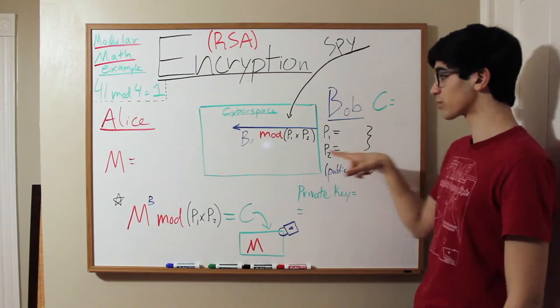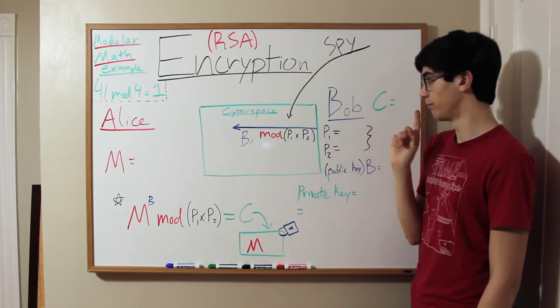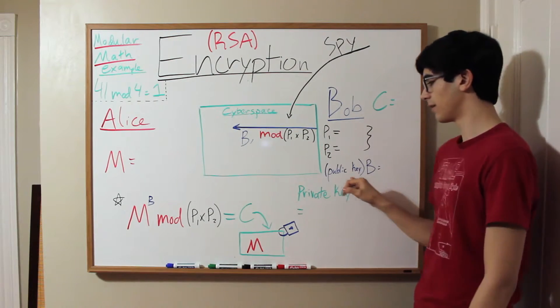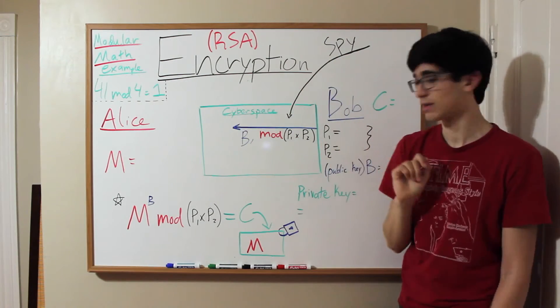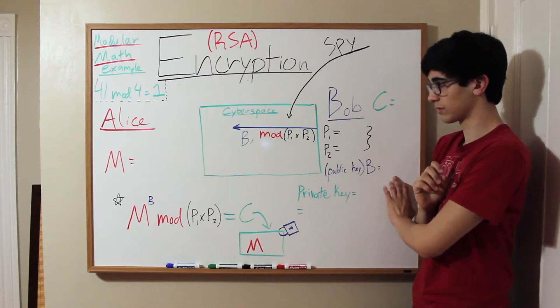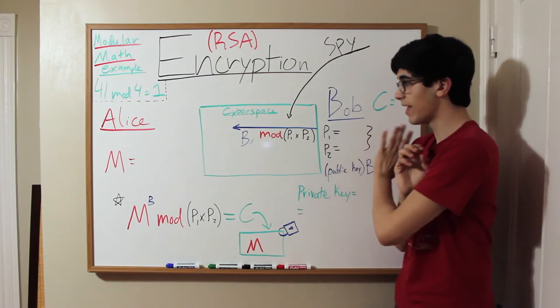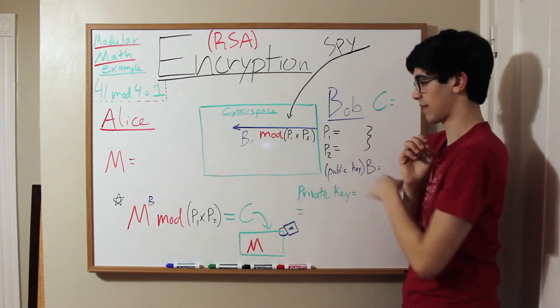So that's where the first two prime numbers come in, but Bob also has a public key. We call this a public key because he's going to share it over cyberspace, knowing perfectly well that the spy can see it. And that's his third prime number, so I'm going to select these prime numbers later, but that's what he gives to Alice over cyberspace.